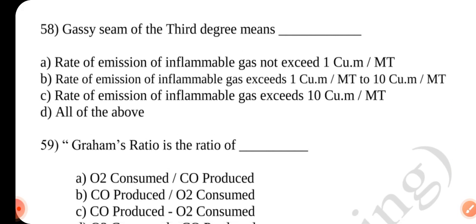Question number 58. Gassy seam of the third degree means dash. Answer is C. Rate of emission of inflammable gas exceeds 10 m3 per metric ton.